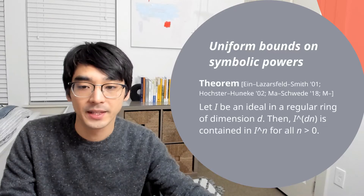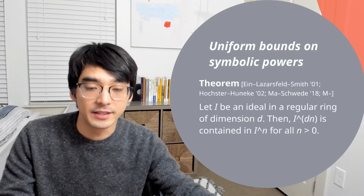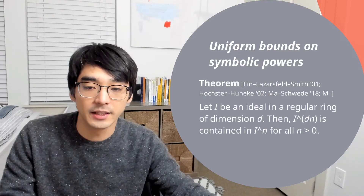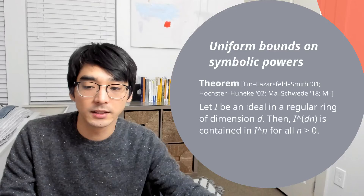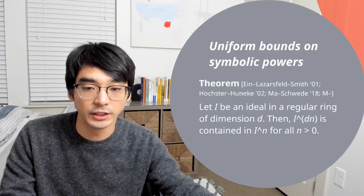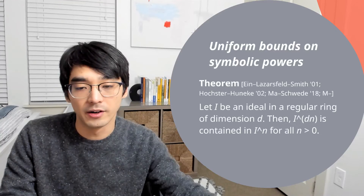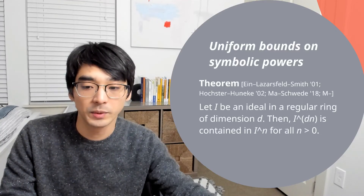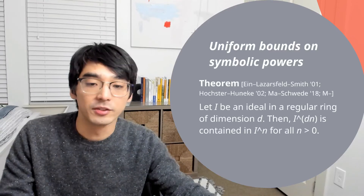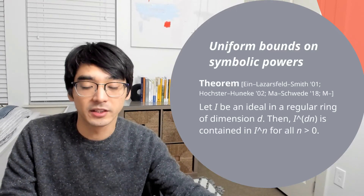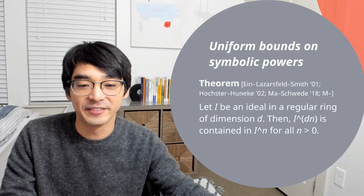One application of perfectoid techniques that I have recently is the following theorem on uniform bounds on symbolic powers. If I is an ideal in a regular ring of dimension d, then the dn-th symbolic power of I is contained in I to the n for all positive n. In equal characteristic, this is due to Ein-Lazarsfeld-Smith and Hochster-Huneke. In mixed characteristics, if I is radical and R is excellent, that's due to Ma-Schwede, and the general case is due to myself. If you're interested in learning about how I use mixed characteristic techniques to prove this theorem, please come to my talk. Thank you very much.